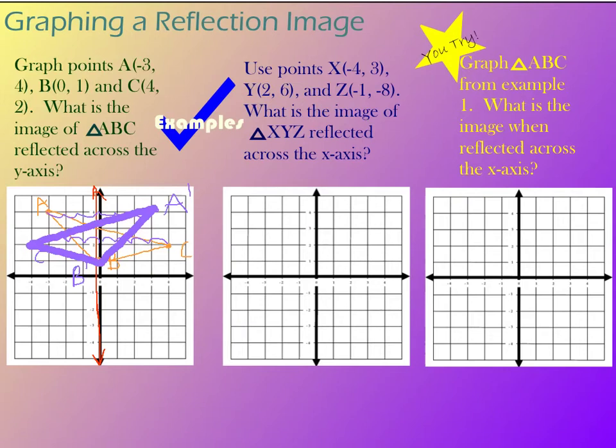We've got X, Y, Z. X is at negative 4, 3. Y is at 2, 6. Oops, my point is going to be a little bit off of my graph, but that's okay.